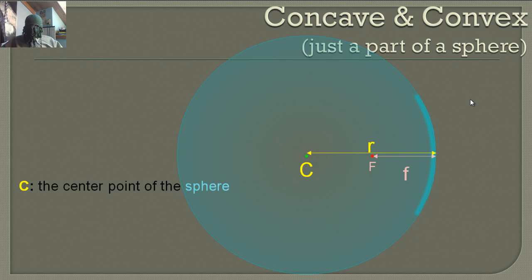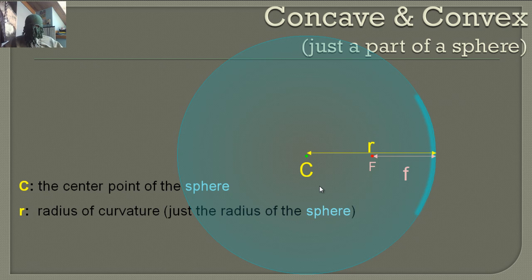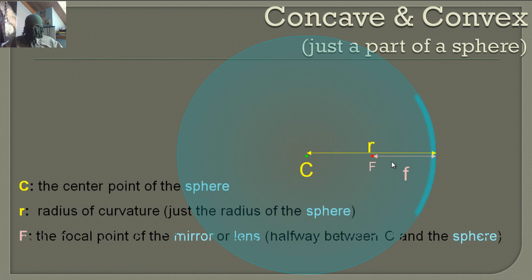When talking about concave and convex mirrors, there are some labels we need to understand. C is the center point of the sphere. R is the radius of curvature, which is basically just the radius of the sphere. F is the focal point of the mirror.